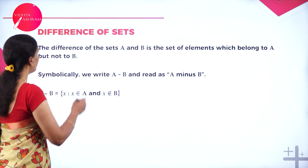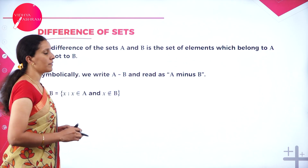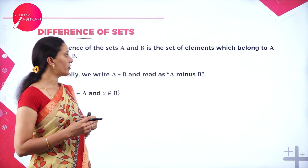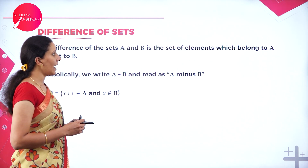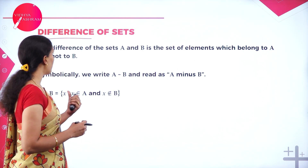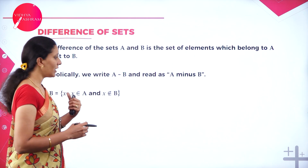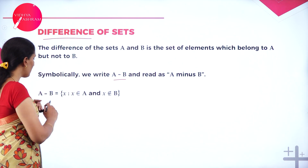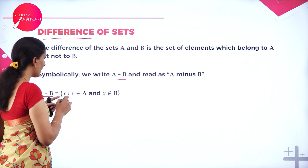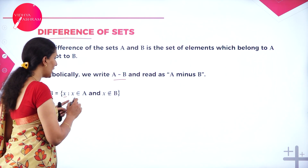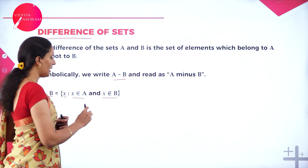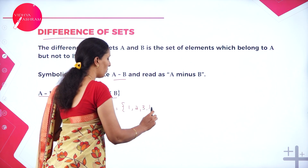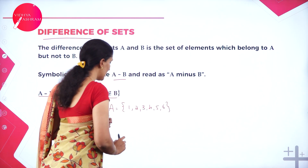The very first one is difference of sets. The name itself says difference means difference of elements inside the set. The difference of sets A and B is the set of all elements which belong to A but not B, and it is usually denoted by A minus B. So what do you mean by A minus B? That means it is a collection of all elements only in A, not in B. Let me take an example: set A is equal to 1, 2, 3, 4, 5, 6.